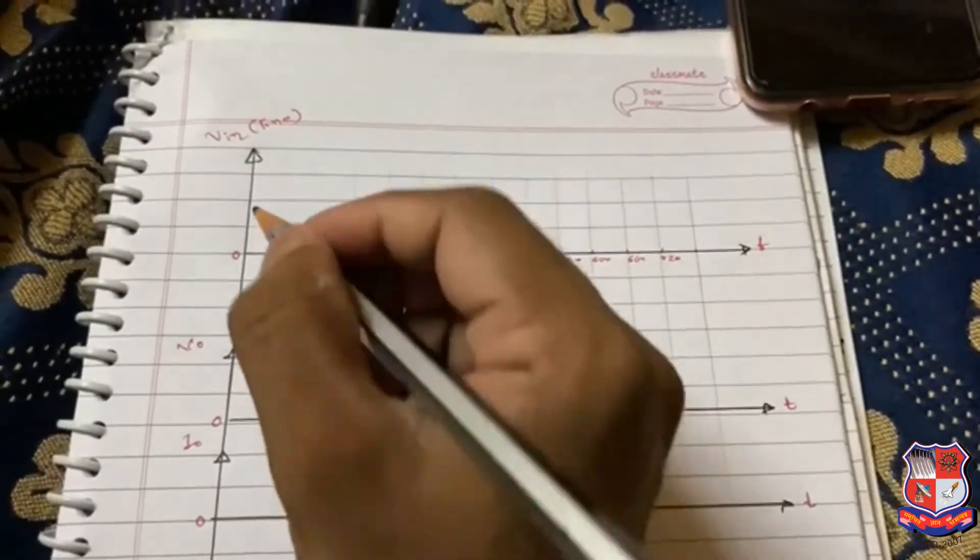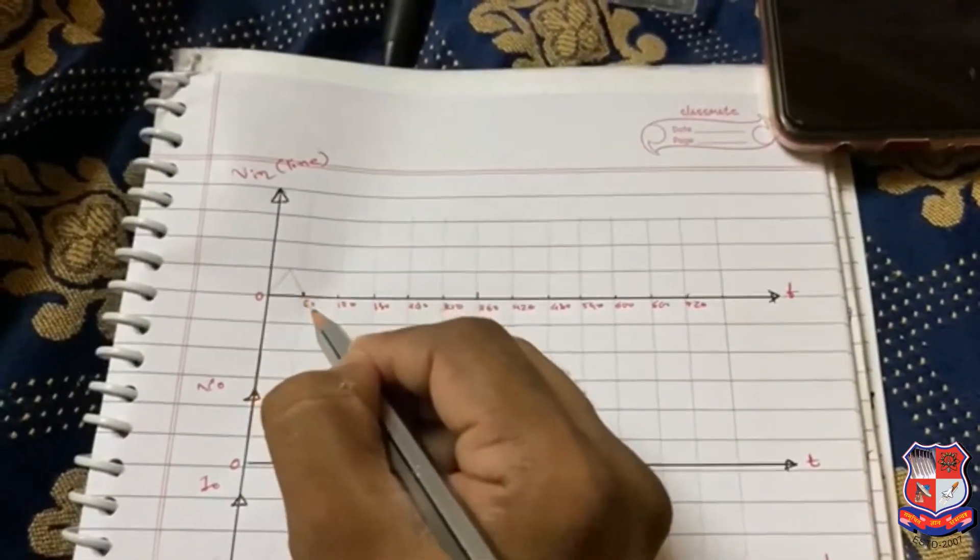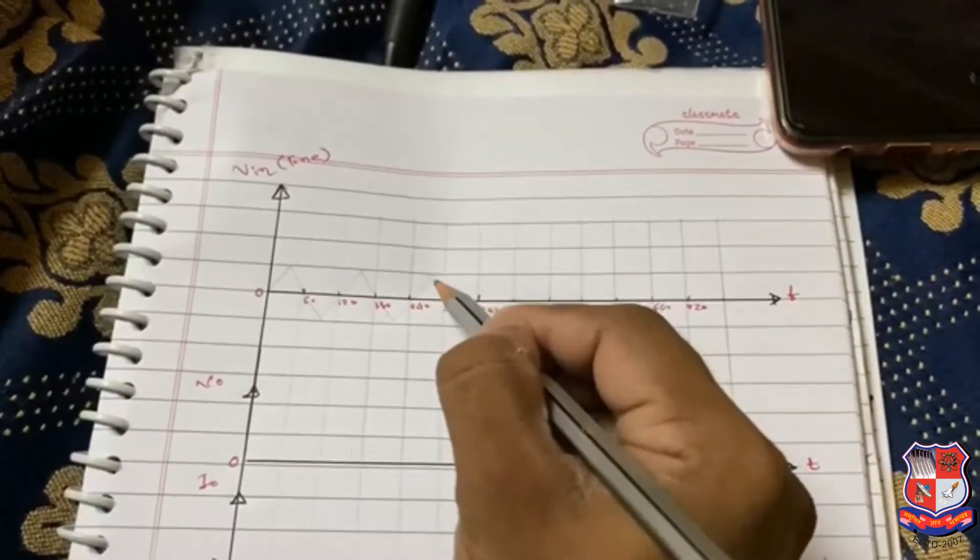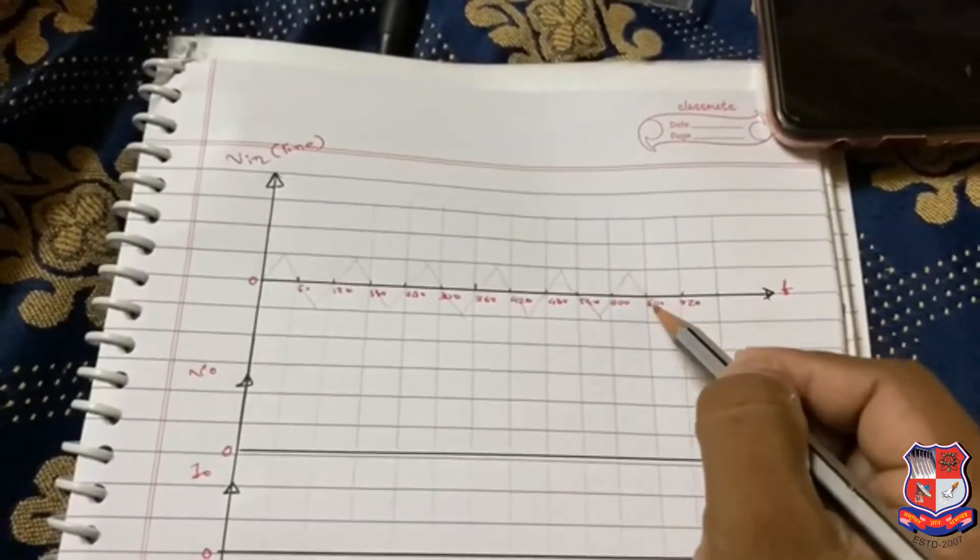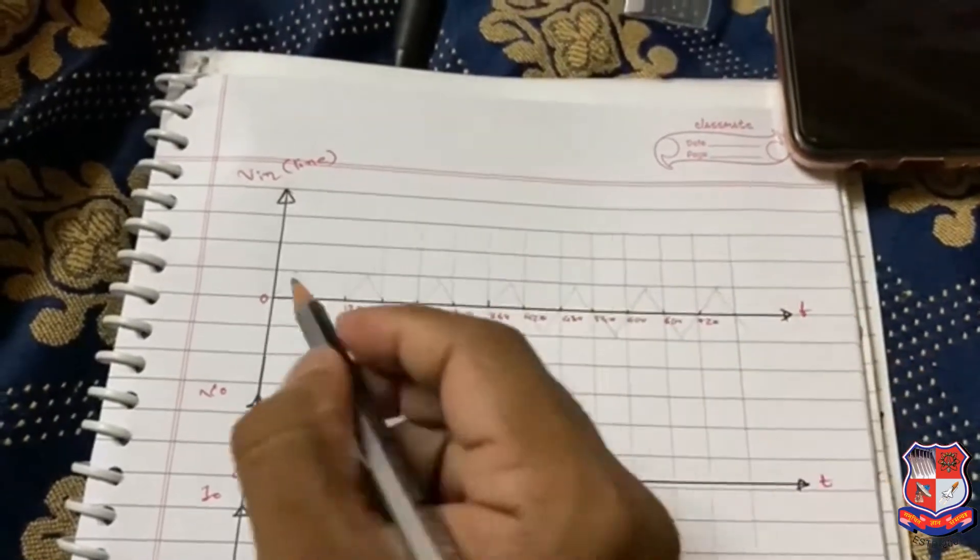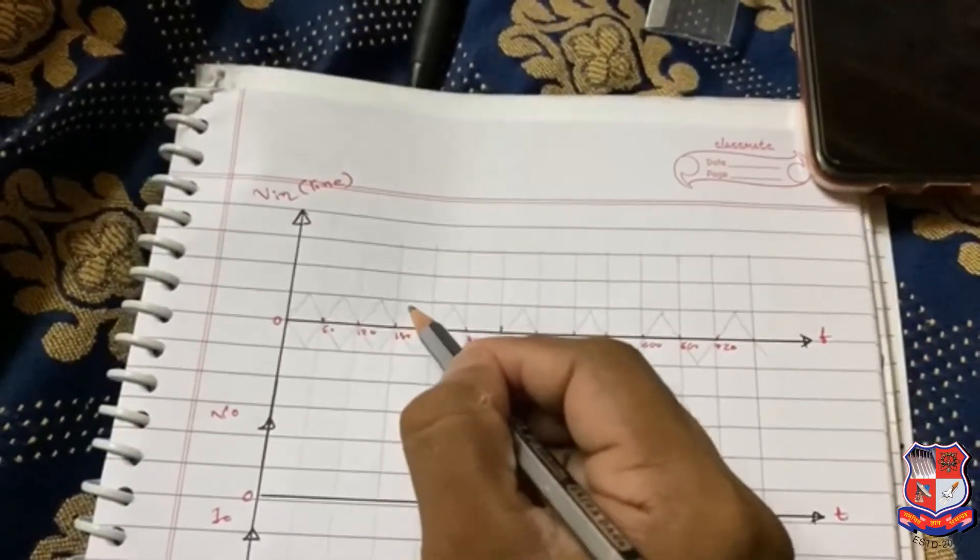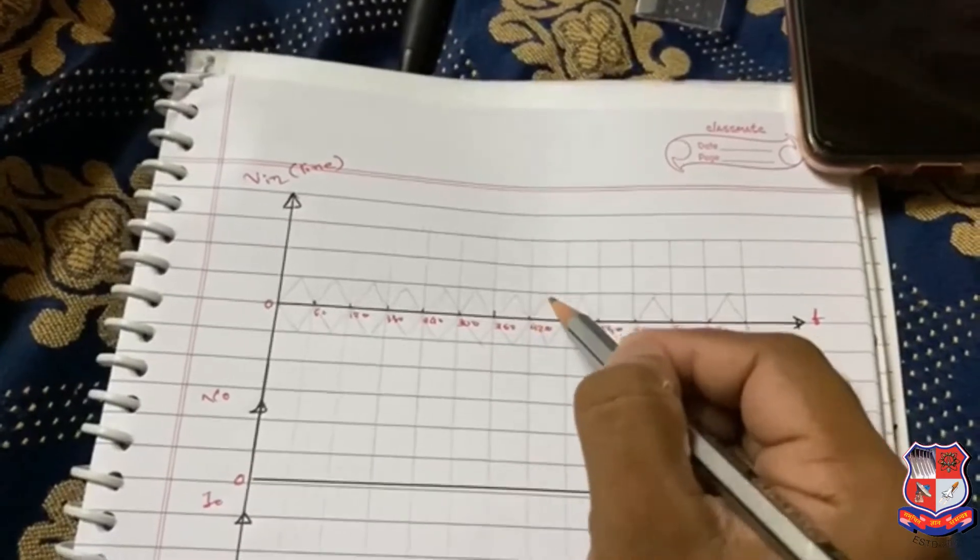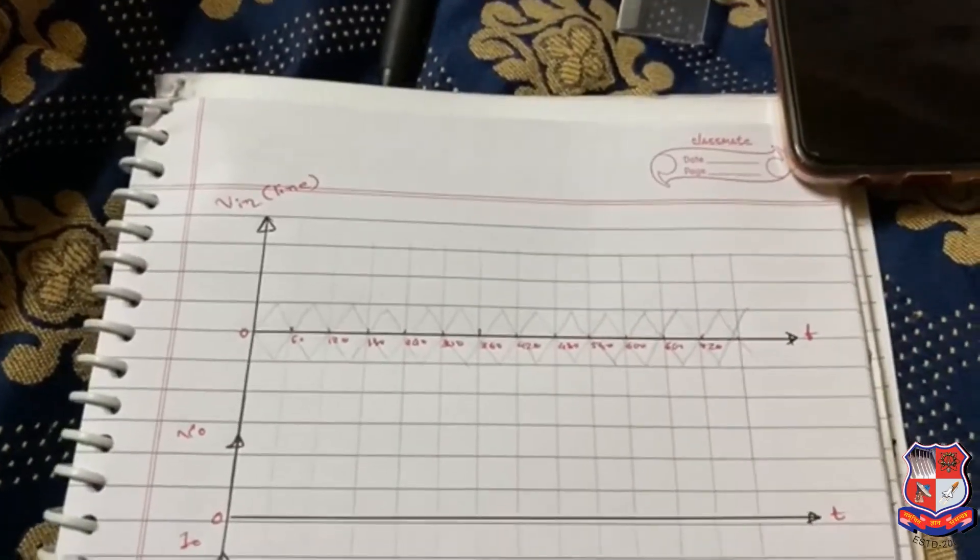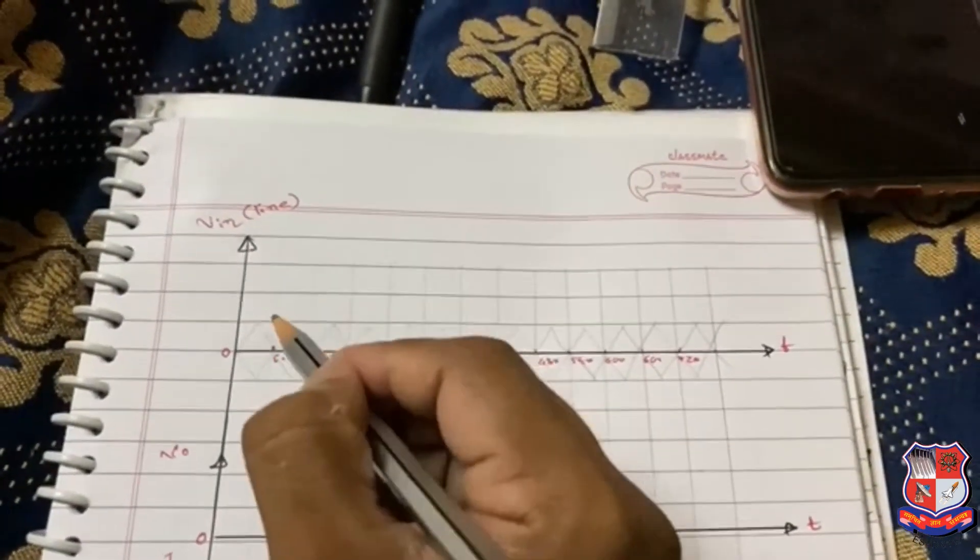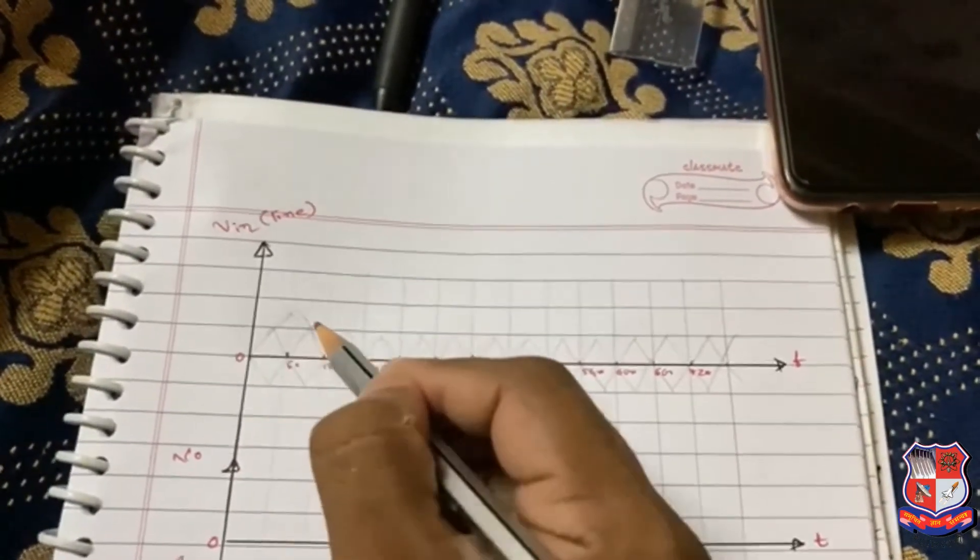Then create triangles. It is a very easy method to draw line voltages. Now draw opposite triangles.